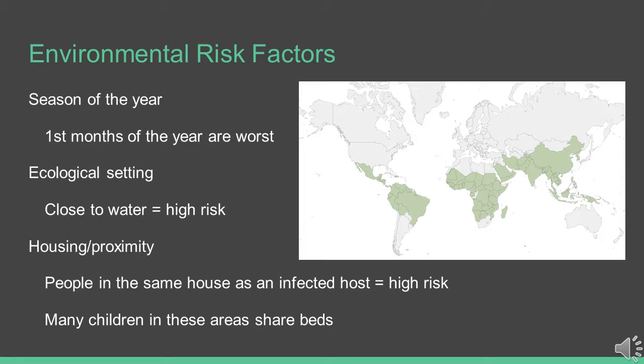The final risk factor is housing and proximity to infected individuals. In the areas of high risk, people who live in the same or nearby house are most likely to be infected. Also in these areas, it's common for multiple children to share beds, which could lead to them all developing the disease.